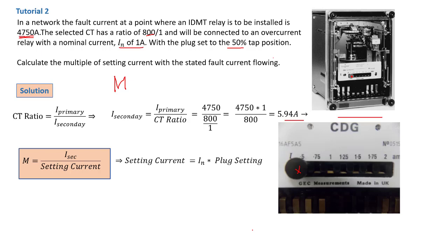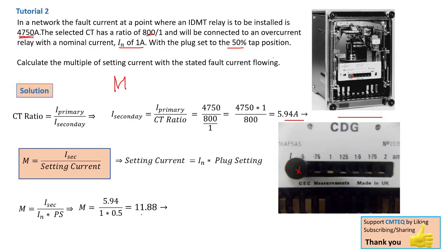All that is needed right now is to replace the known values into the formula of M. Replacing the values, it will give us an M value of 11.88. The value of M will then be used to calculate some other parameters that make up the working of an IDMT relay.